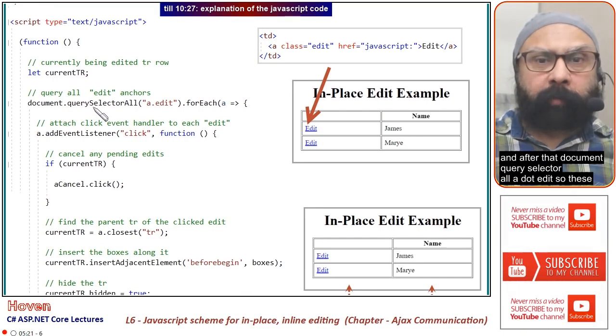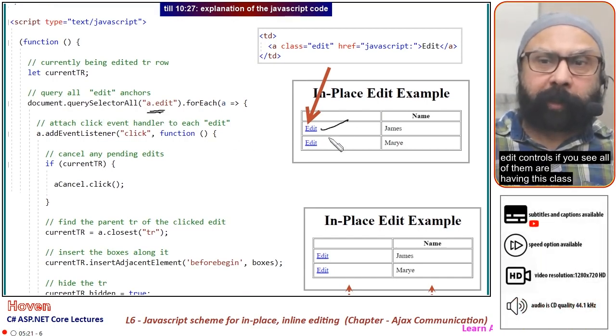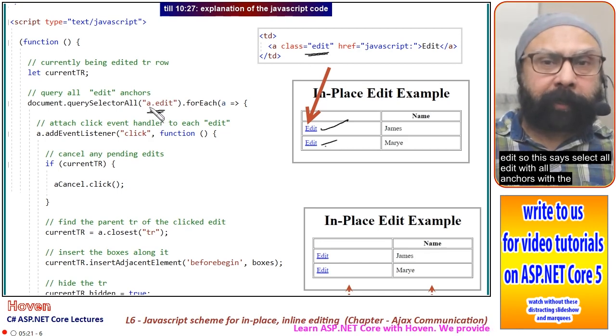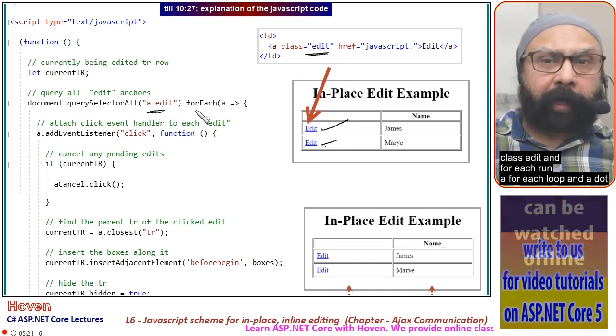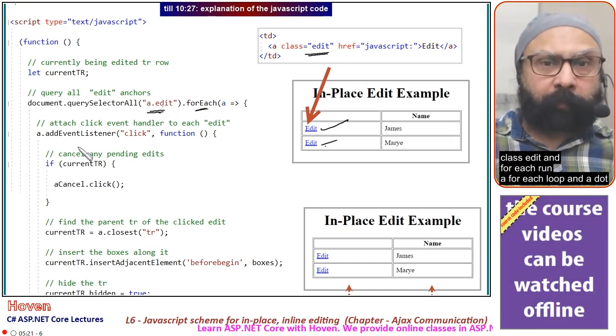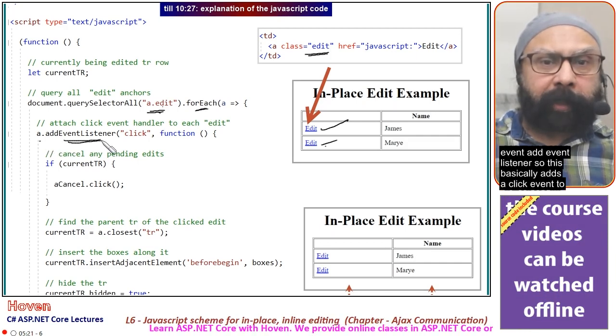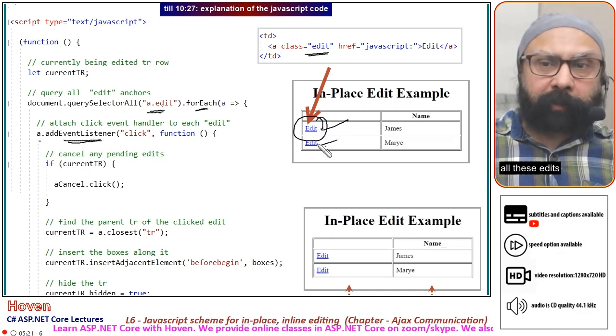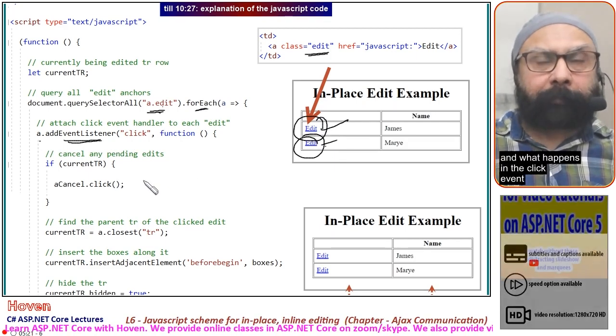After that, document.querySelectorAll('a.edit'). These edit controls all have the class edit. This selects all anchors with class edit, runs a forEach loop, and adds an event listener to each.